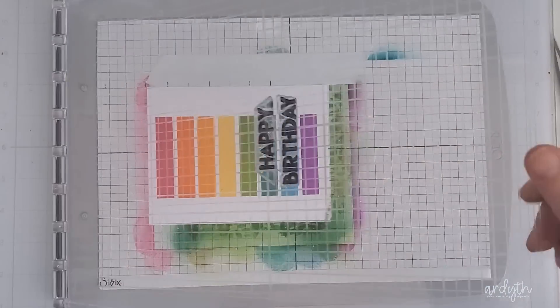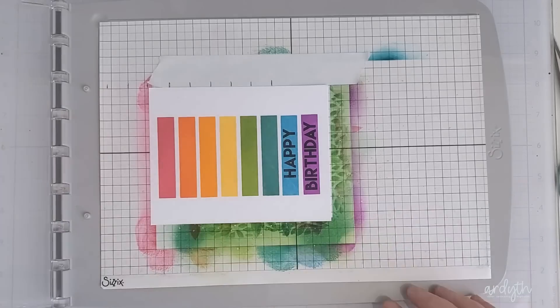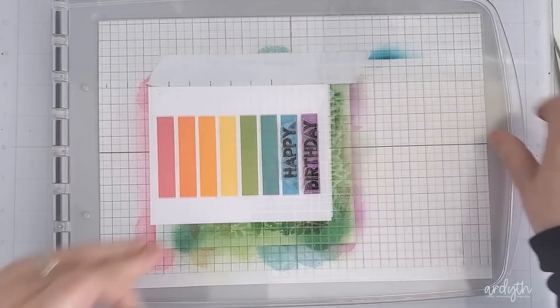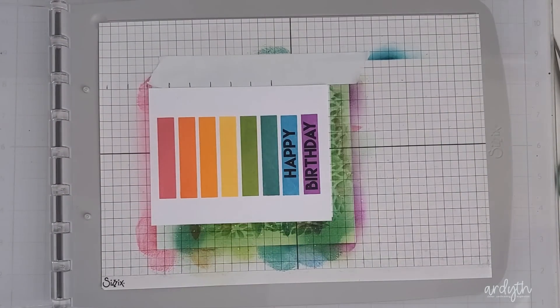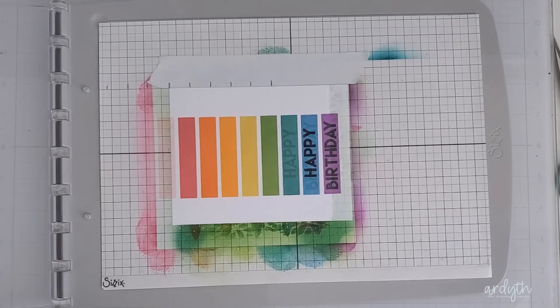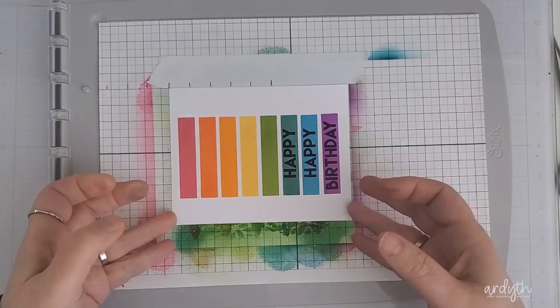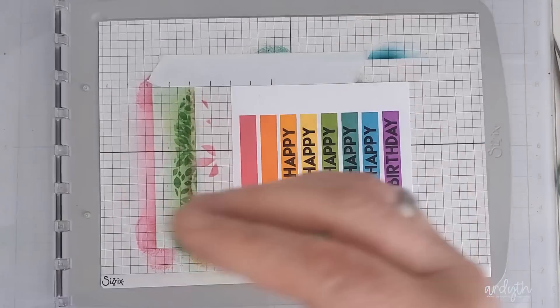I lined up the birthday in the purple bar and the happy in the blue bar next to it and I stamped them at the same time with the eclipse black ink. Then I removed the birthday from the door and I moved my card stock back to the right by 3 eighths of an inch at a time stamping the happy on every color until it was all filled in.